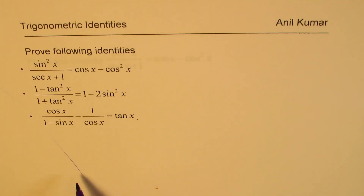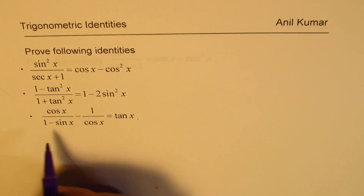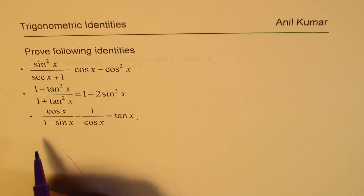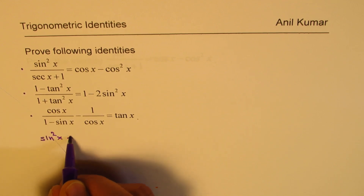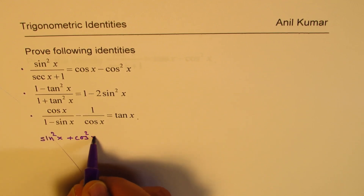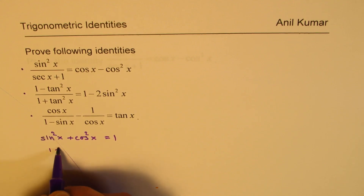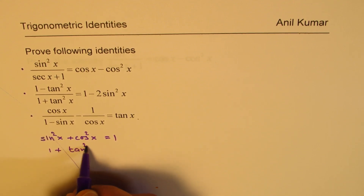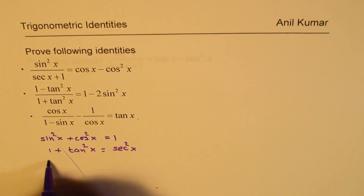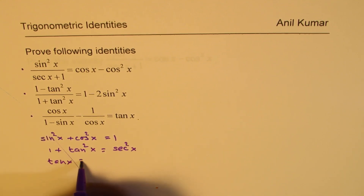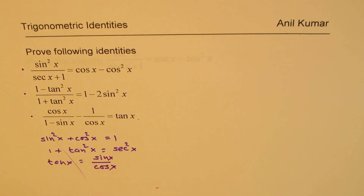What you really need to know are the basic trigonometric Pythagorean identities: sine squared x plus cosine squared x equals 1, 1 plus tan squared x equals secant squared x, and tan x equals sine x over cosine x. That is the basic knowledge you need to prove these identities.